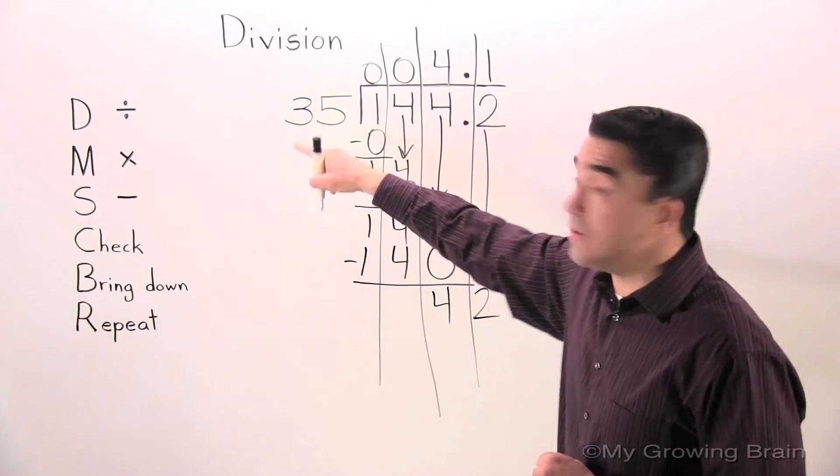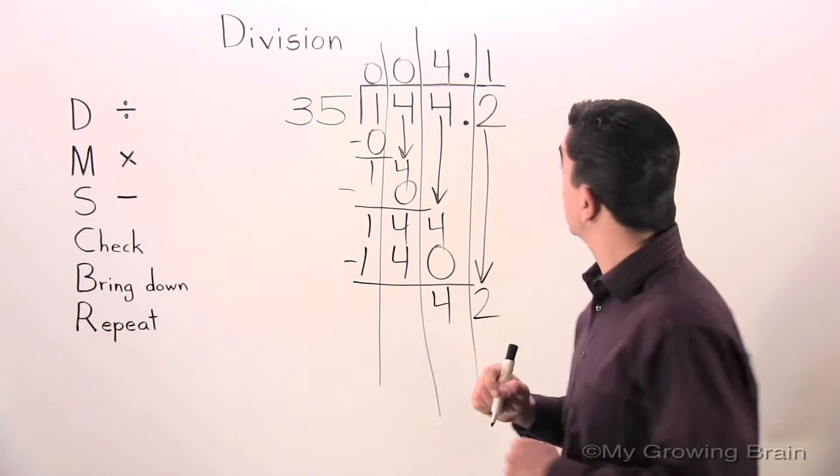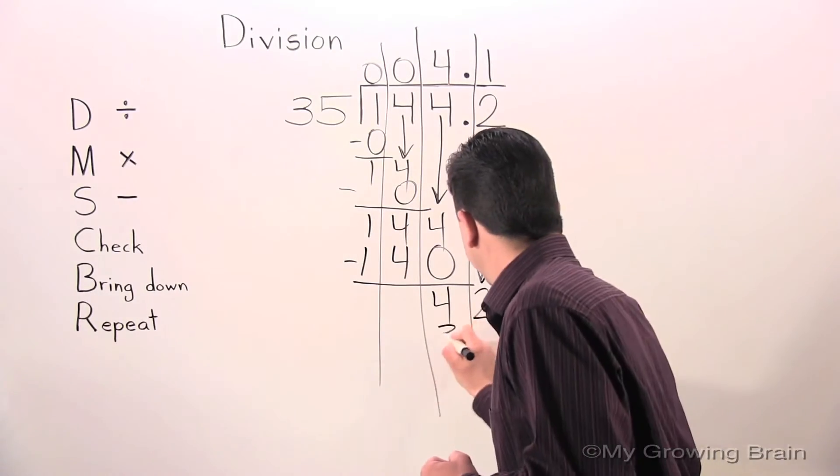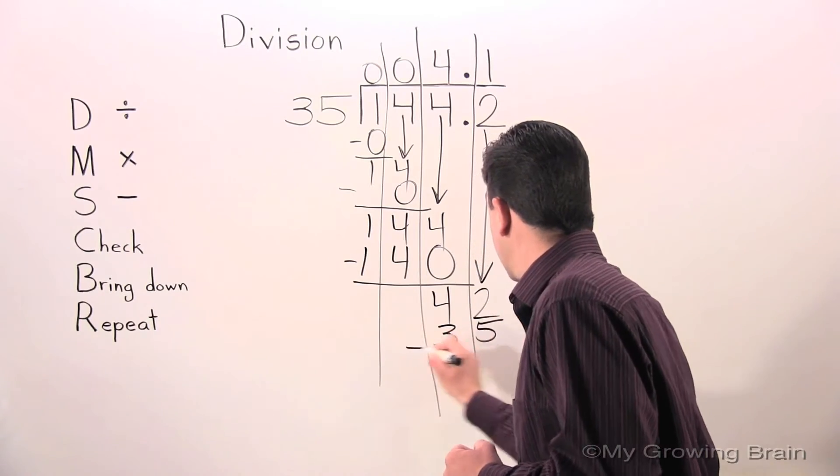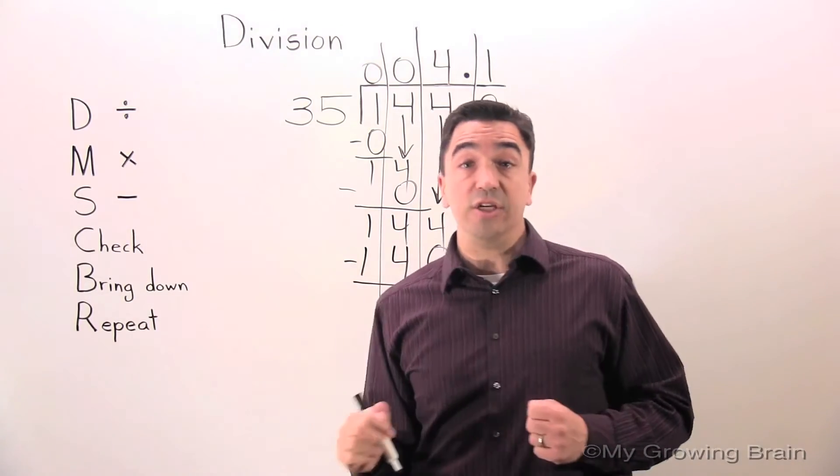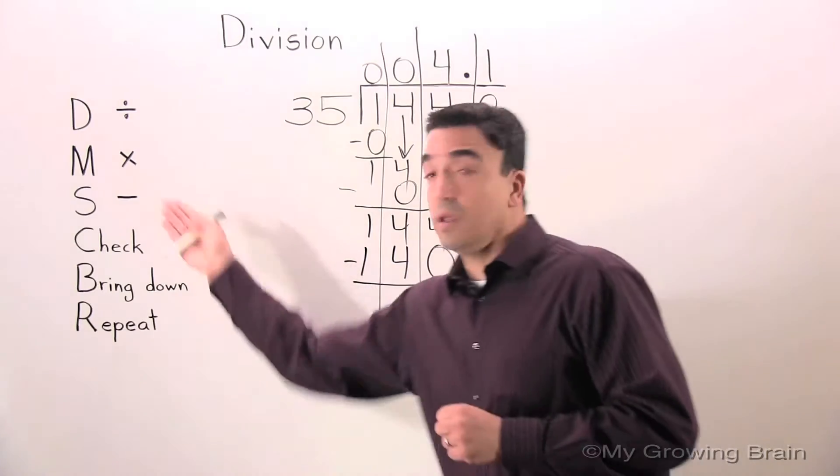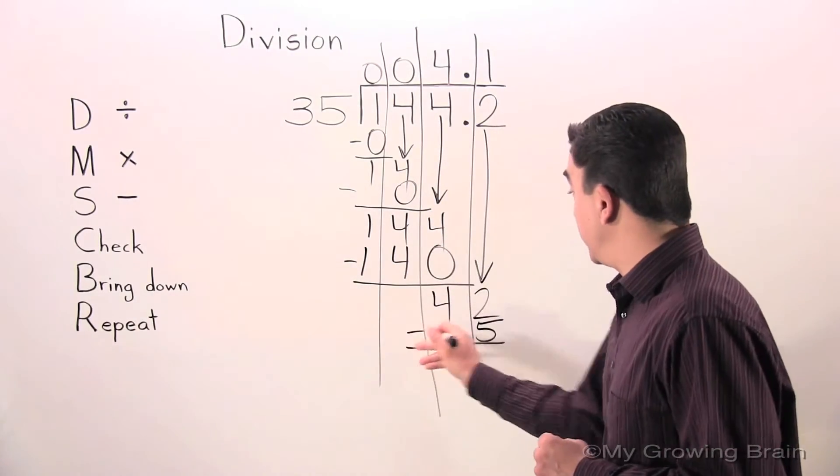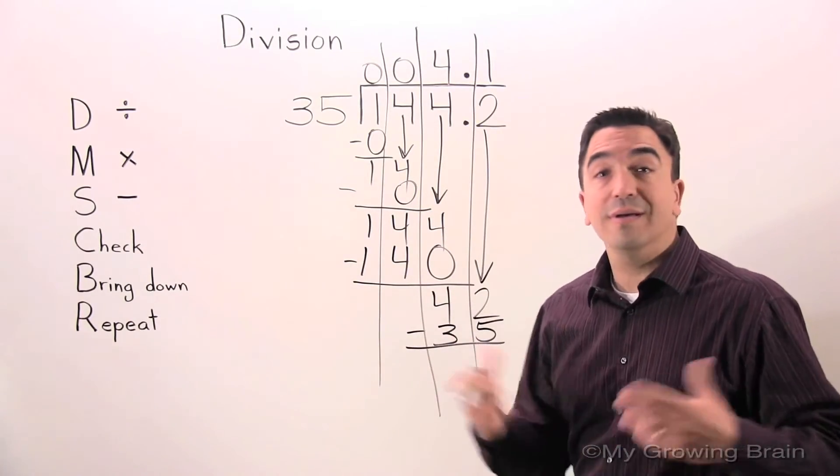35 times 1 is 35. Now we just did the multiplication step. So next step: subtract. 42 minus 35 is 7.